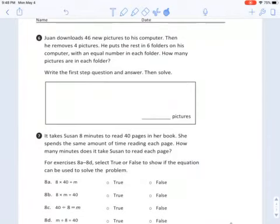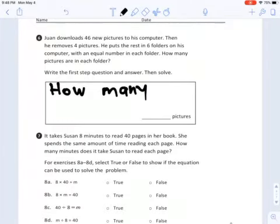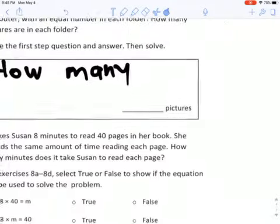Number six, Juan downloads 46 new pictures to his computer. Then he removes four pictures. He puts the rest in six folders on his computer, with an equal number in each folder. How many pictures are in each folder? So that's when you're going to write that first step question and answer. My recommendation for this one, for the first step question, you'd probably want to start with how many, and use that to help, and then make sure to solve it.